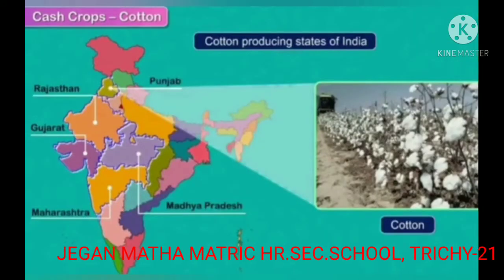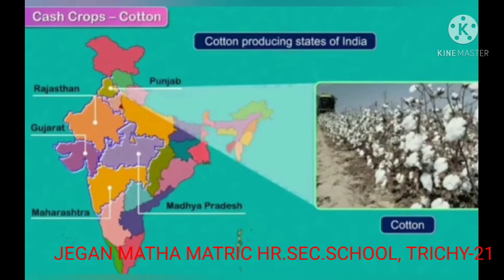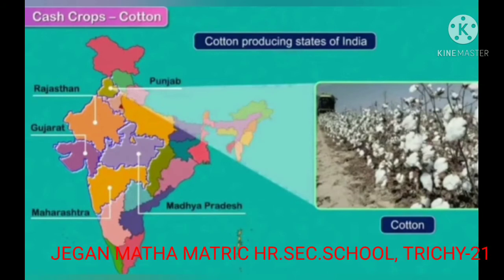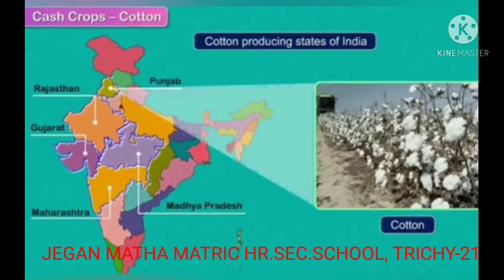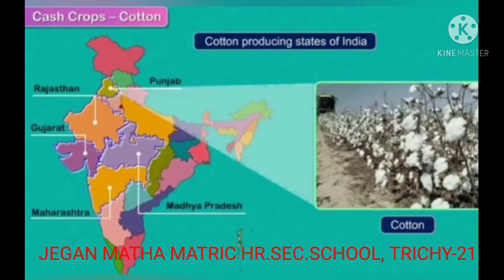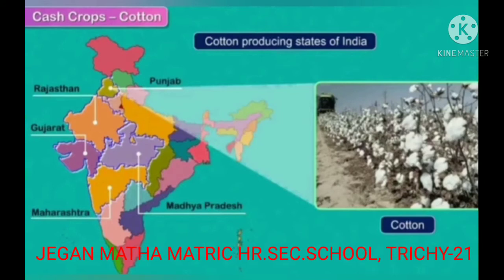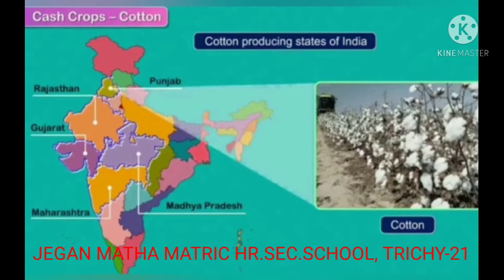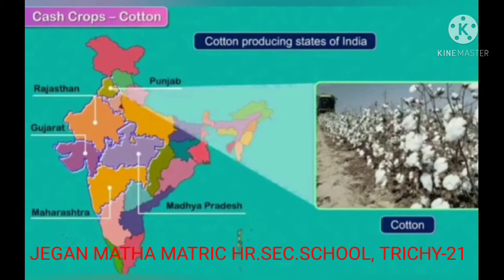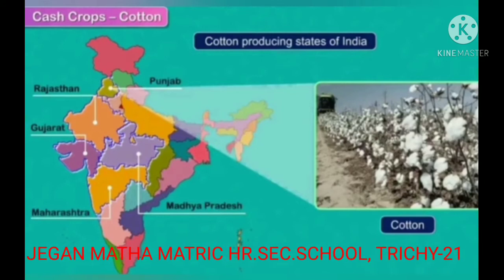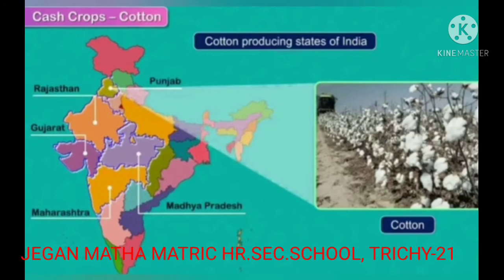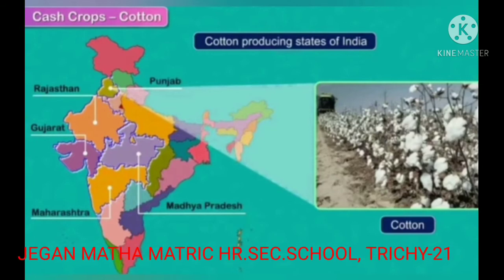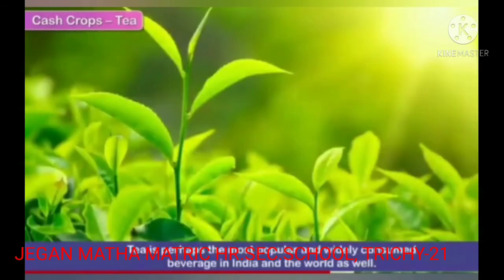Cotton producing states of India are Punjab, Madhya Pradesh, Maharashtra, Gujarat, and Rajasthan.